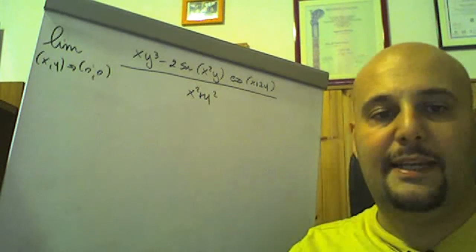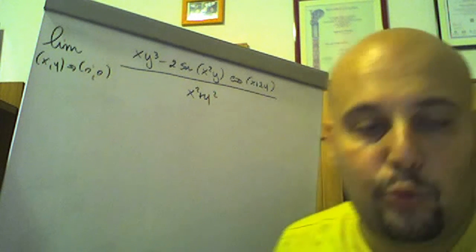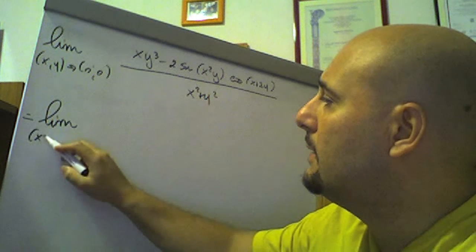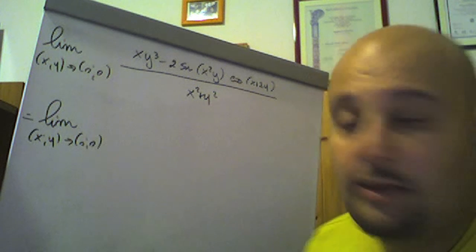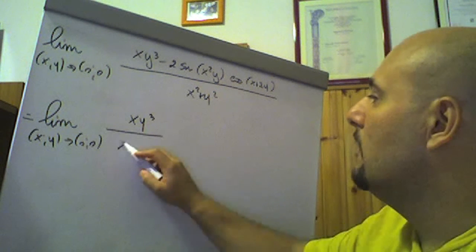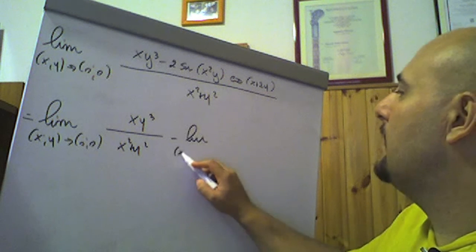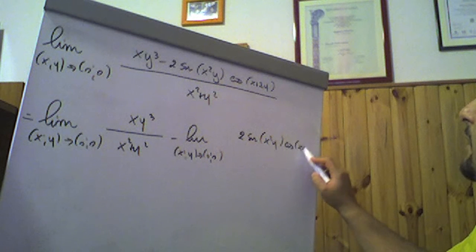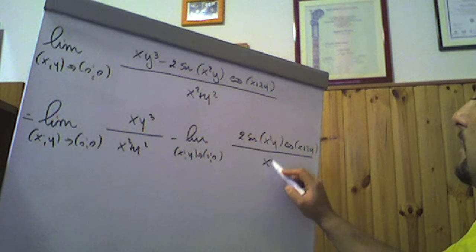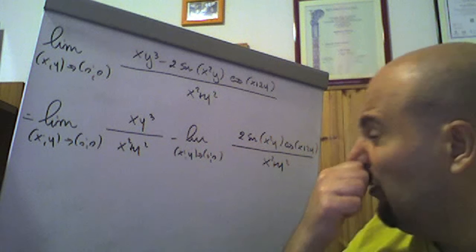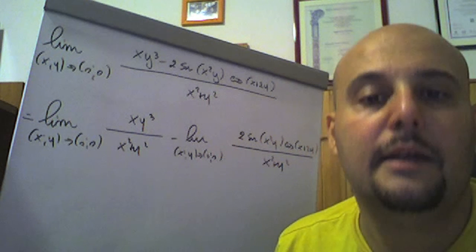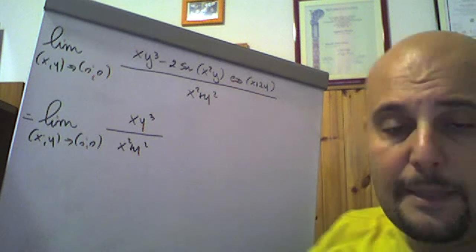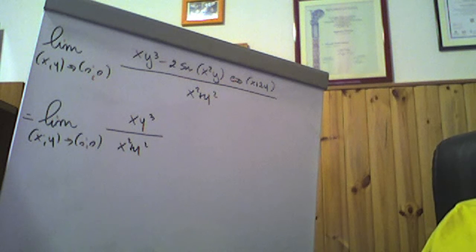Now let's look at this other limit: lim_(xy→0,0) of [xy³ - 2sin(x²y)cos(x+2y)] / (x²y²). This limit can be split into two parts using the distributive property of division: the limit of xy³/(x²+y²) minus the limit of 2sin(x²y)cos(x+2y)/(x²+y²), provided we don't get an indeterminate form like ∞ - ∞.